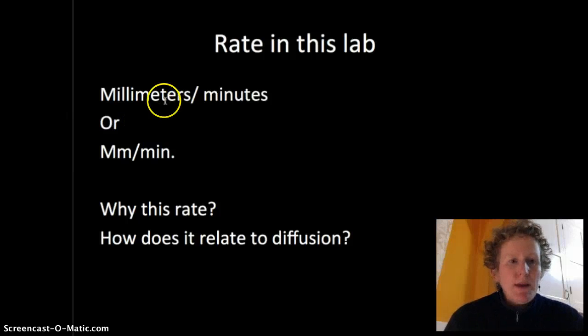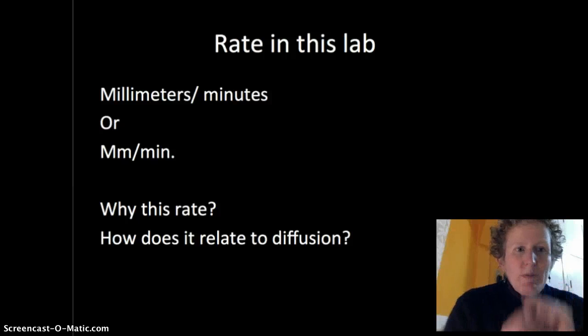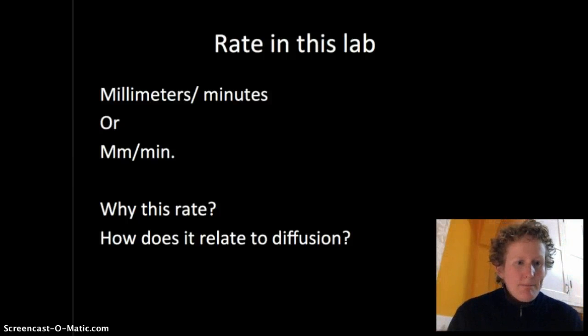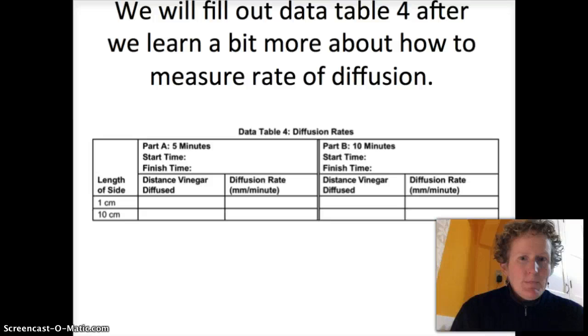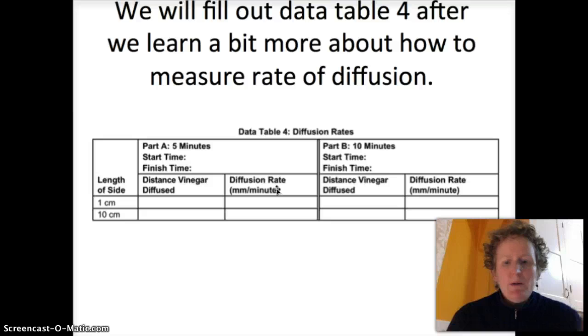We're going to measure the rate of diffusion in millimeters per minute which is pretty slow if you want to compare it to driving in your car. Remember a millimeter is what you measure the length of the white part of your fingernail in. But cells are pretty small. We're going to fill out data table 4, the rate of diffusion in millimeters per minute. Right now let's talk more about our model cells.